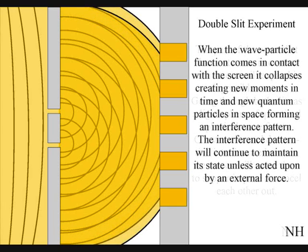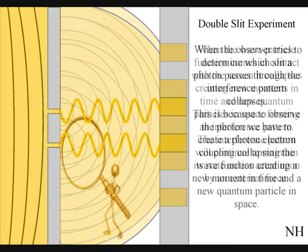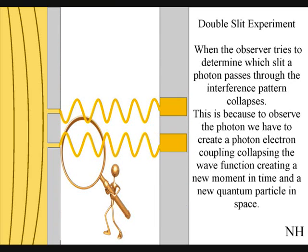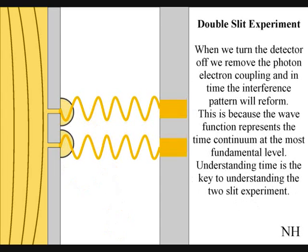When the observer turns on a detector to determine which slit a photon passes through, the interference pattern collapses. At that moment in time, the interference pattern disappears. Because to observe the photon, we have to physically create a photon-electron coupling, collapsing each wave front into a new quantum particle that will have its own position in space and time that the wave front never had before the collapse. This has nothing to do with consciousness. If we turn the detector off, we remove the photon-electron coupling, and in time, the interference pattern reforms.